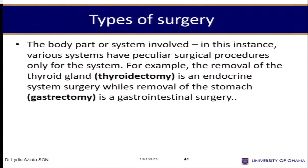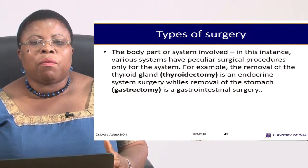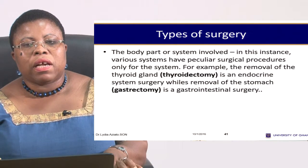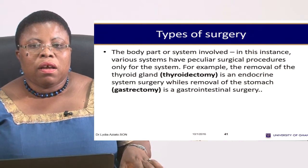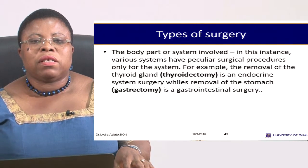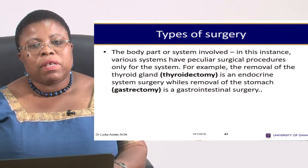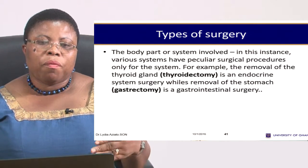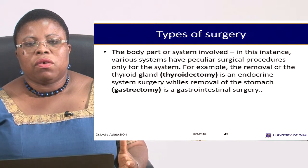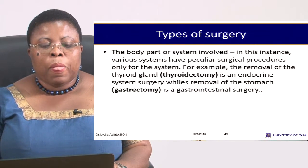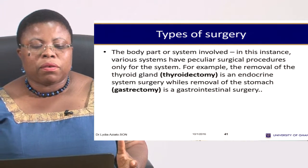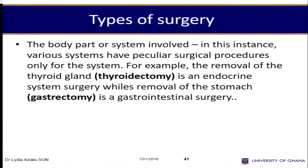We also have types of surgery relating to body parts. For example, thyroidectomy refers to the neck. The words are fixed — you cannot substitute them. That is why prefixes, suffixes, and terms used in surgery are foundational. If you are not sure of these, progression in surgery becomes difficult. Gastrectomy — removal of the stomach, either partial or total — is another example.